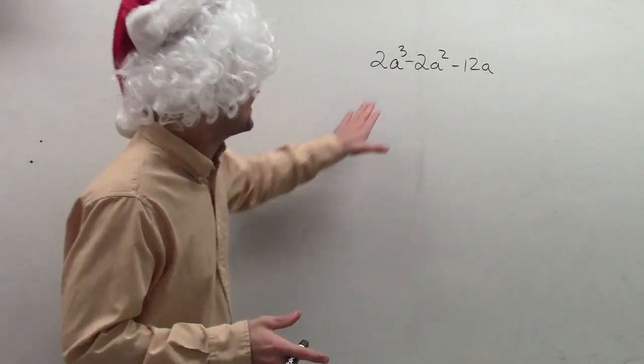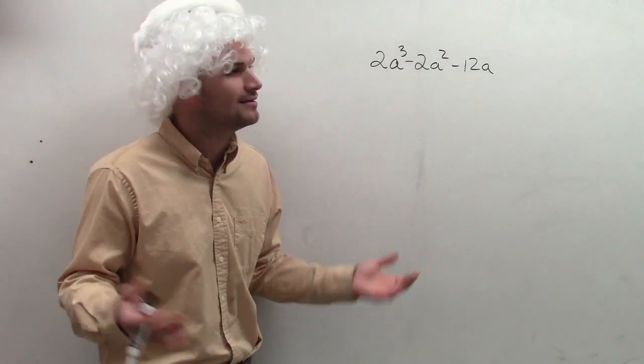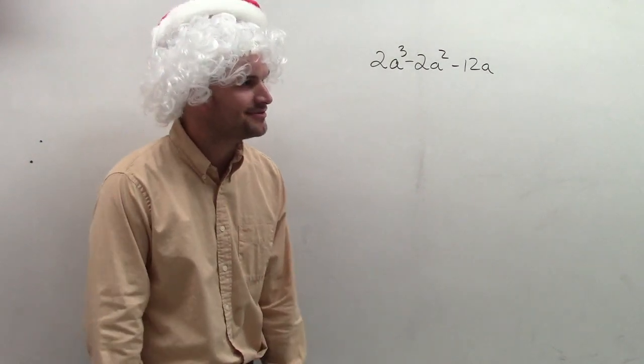What I'd like to do then is to go and work this. I have 2a cubed minus 2a squared minus 12a. OK.